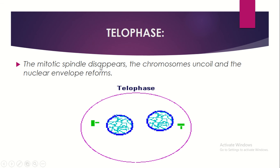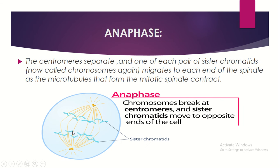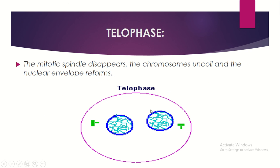In telophase, the mitotic spindle disappears and the chromosomes uncoil, and the nuclear envelope reforms. At this stage, each end of the cell has 46 chromosomes with similar DNA, and the nuclear envelope is formed around each set.